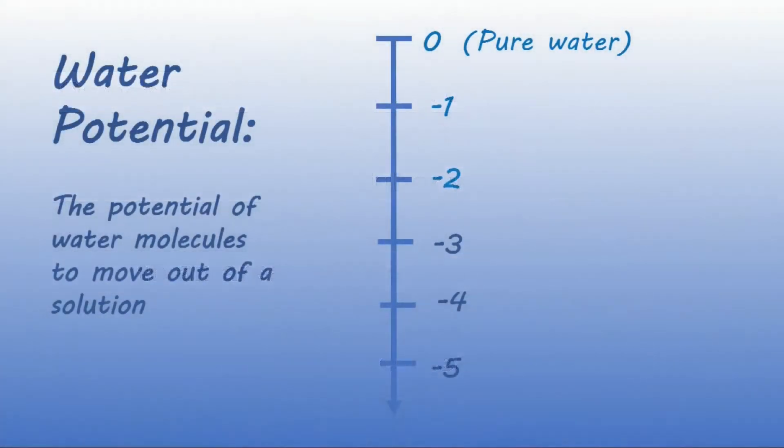Well, if we had a scale of water potential, the highest possible water potential value of a solution is zero, which would be pure water. As we add more solute, like sugar or salt, the solution gets more concentrated and the water potential gets more negative. Basically, the higher the water potential of the solution, the more watery it is.